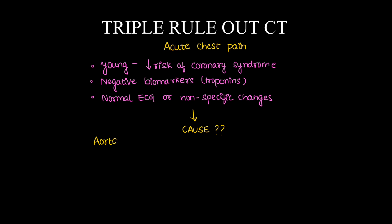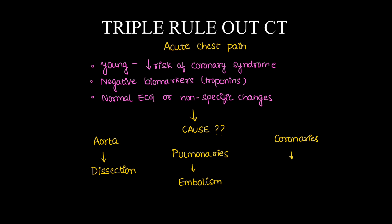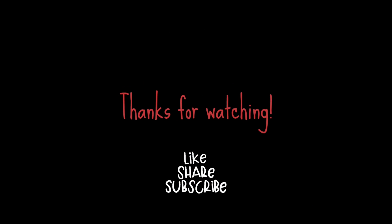The causes to be ruled out include aortic dissection, pulmonary embolism, and coronary artery causes. I will be doing a separate video on triple rule-out CT which I'll explain in detail. Thanks for watching — like, share, and subscribe, and follow our channel Radiology Doodles.